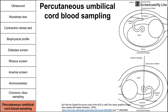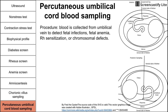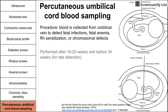One last test is percutaneous umbilical cord blood sampling, also abbreviated as PUBS. This is a procedure in which blood is collected from the umbilical vein to detect fetal infections, fetal anemia, Rh sensitization, or chromosomal defects. There are two methods: anterior sampling or posterior sampling, depending on the position of the fetus and placenta. PUBS is performed between 18 to 20 weeks and 34 weeks of gestation, making it generally a later detection method.